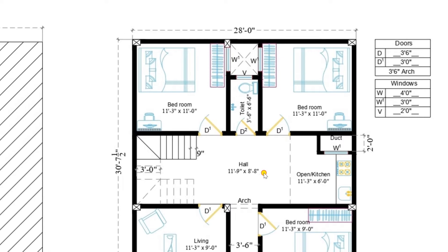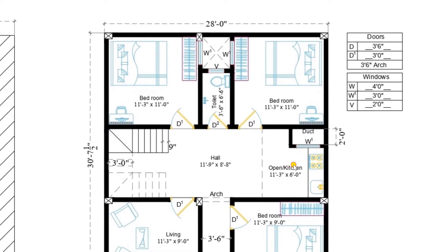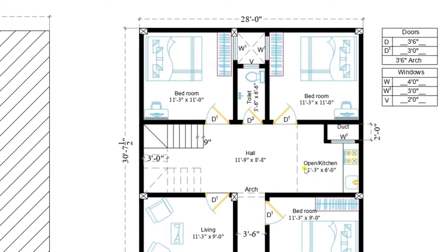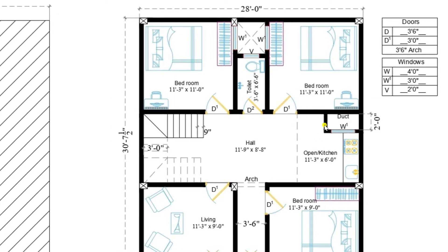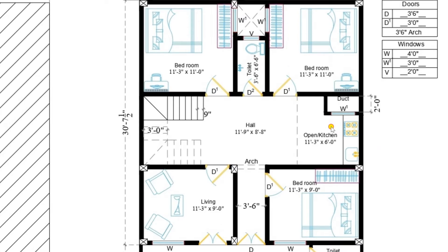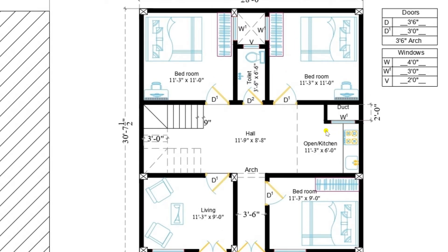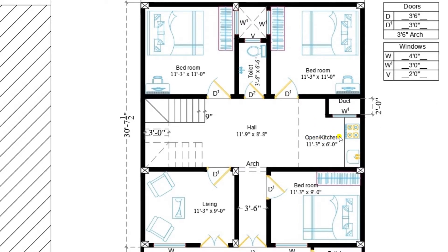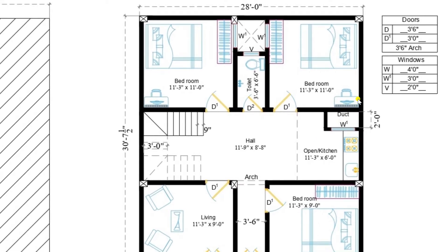On the right side of the hall there is an open kitchen of size 11 feet 3 inches by 6 feet. Nowadays open kitchens are in demand. The stove and wash basin have already been fixed and there is a duct. Because this is a corner plot with another plot on this side, we can't provide a window here. That's why a duct is provided for ventilation so that kitchen steam can easily escape outside.